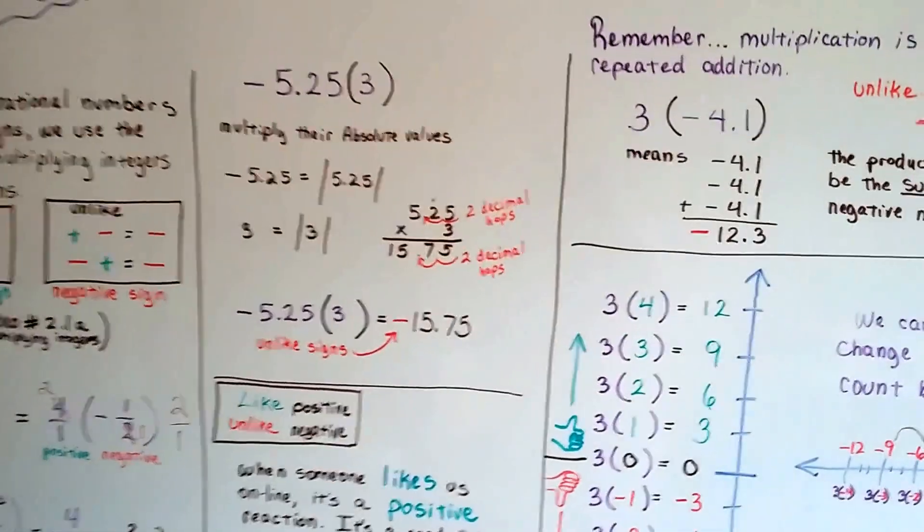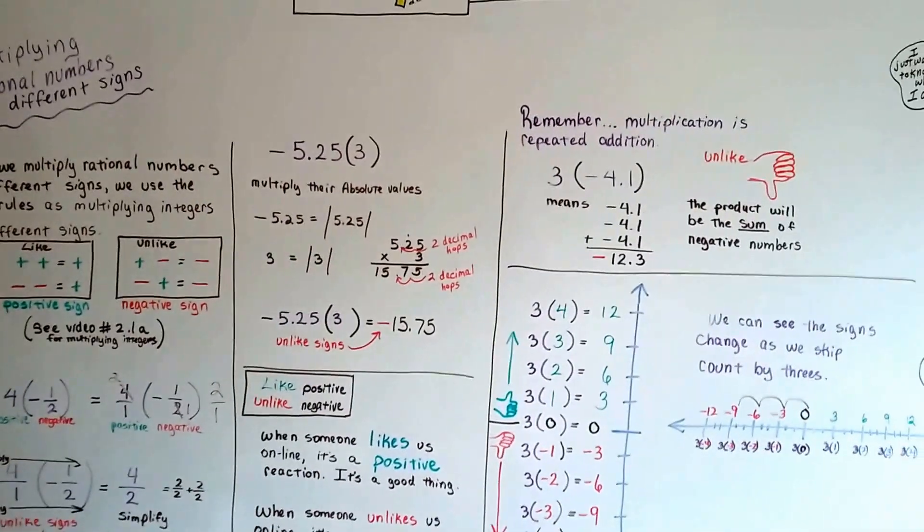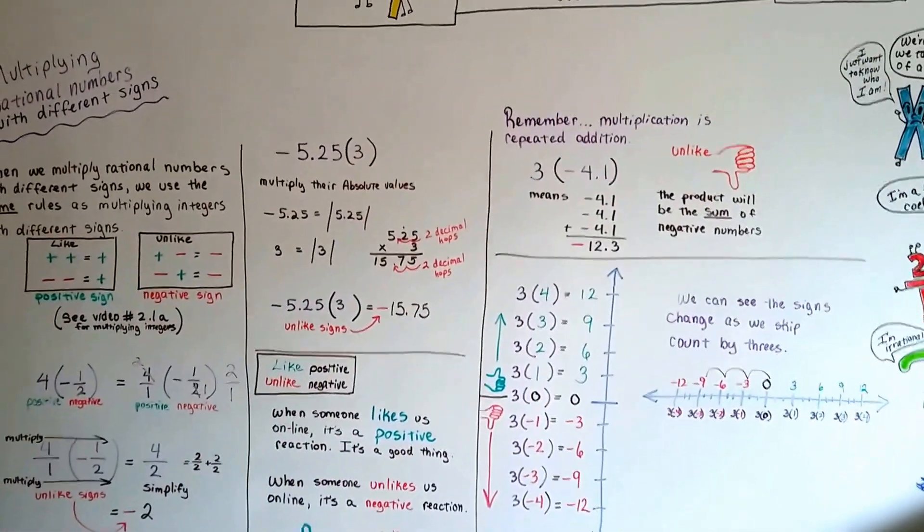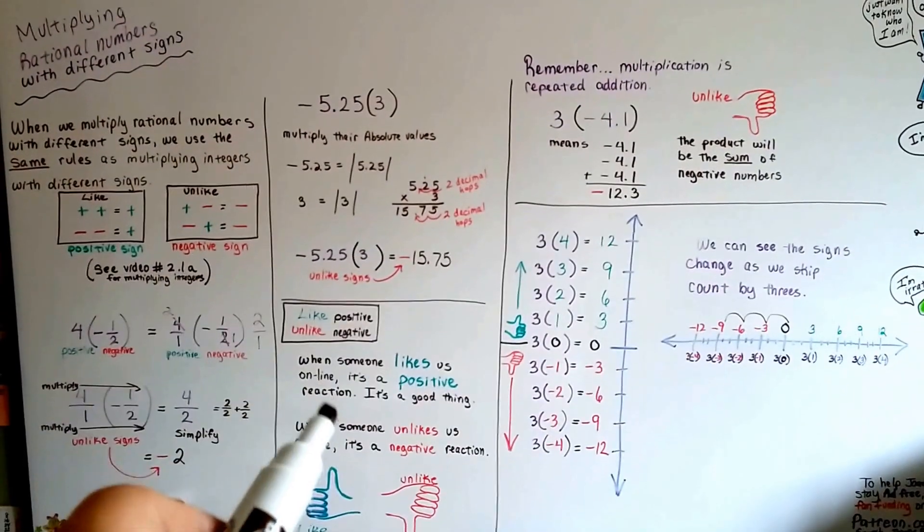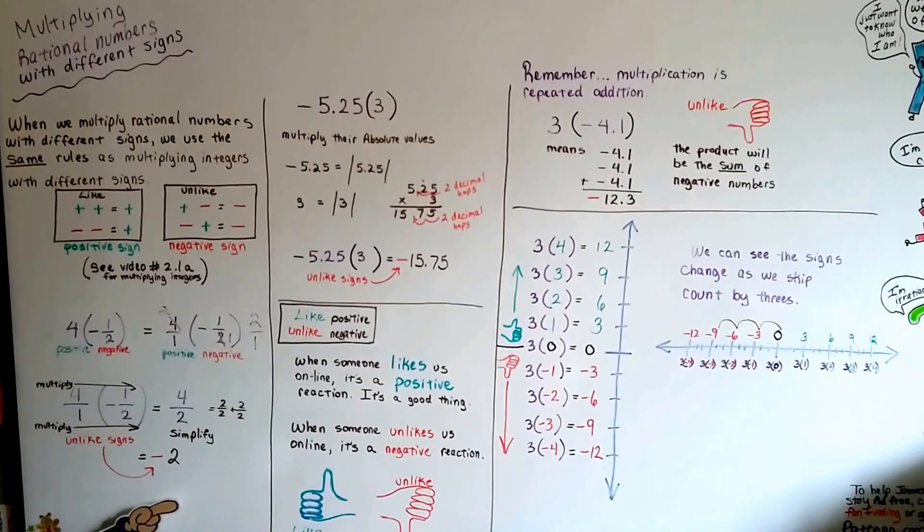All right, we're going to go on to 3.4B, and we're still on the same topic of multiplying rational numbers. And I hope to see you there. And I hope this was helpful. Try to remember the like and unlike. That might really help you, okay? I'll see you next video. Bye.